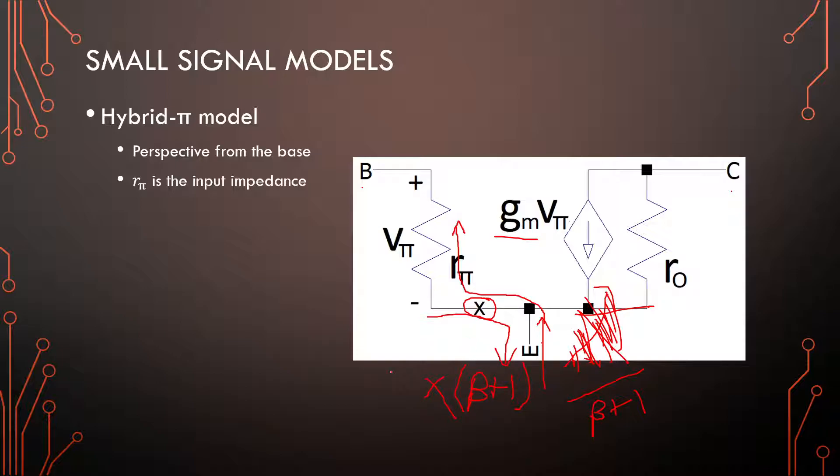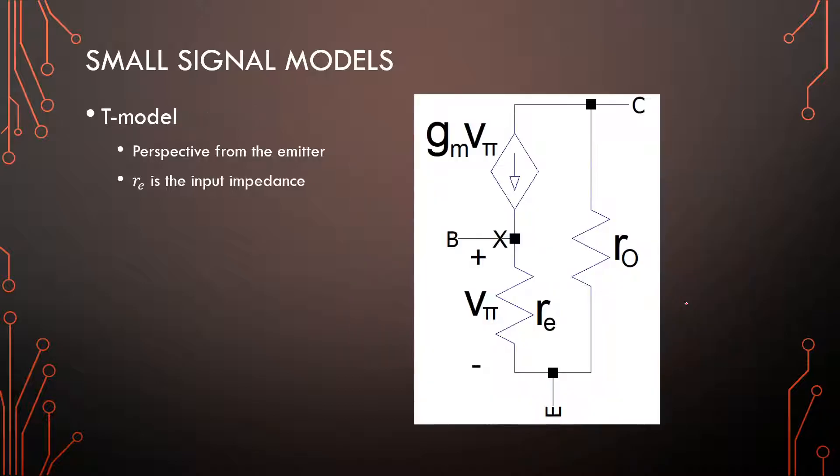So, we need to populate this model. We have three parameters: r_pi, g_m, r_out. Same goes for the T model. As I said, the T model is just a perspective from the emitter. So we have r_e and this x moved. From the base side, everything will still be multiplied with beta plus 1 going forward past this cross. And moving backwards across it, you will divide by beta plus 1. So it is just a matter of perspective for the T model or the hybrid pi model. So there is a conversion function between r_e and r_pi, and that's dividing or multiplying of beta plus 1. Plain and simple.